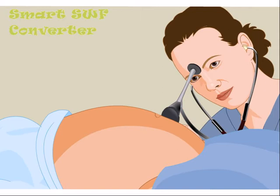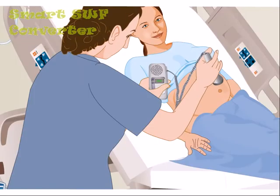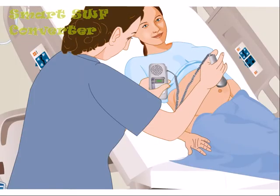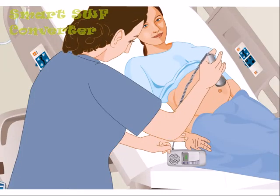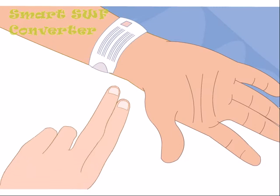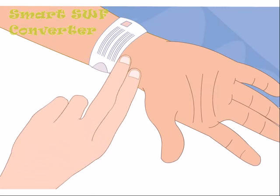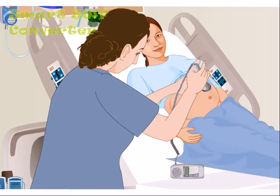Intermittent Auscultation: Place the listening device over the area of maximal intensity and clarity of the fetal heart tones. Fetoscope: Place the bell of the fetoscope over the fetal back with the headplate pressed against the nurse's forehead. Electronic Transducer: Apply transducer gel over the transducer, then place the transducer over the fetal back, moving it slowly back and forth until clear fetal heart tones are auscultated.